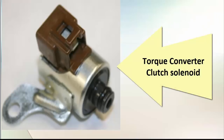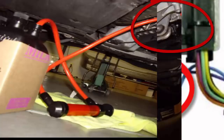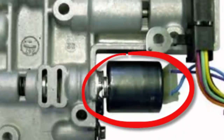Third, torque converter clutch solenoid. This solenoid controls the fluid entering and exiting the torque converter clutch, and it is fixed with the valve body.